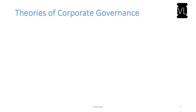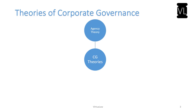There are four dominant theories of corporate governance. Number one is the agency theory. As per the agency theory, the managers act as agents of the corporation and the owners act as the principals of the corporation. As per the agency contract, the agent should protect the interest of the principal, and hence there is a deemed contract between the agents — that is the managers — and the owners.